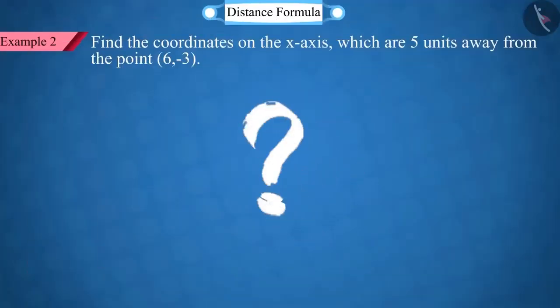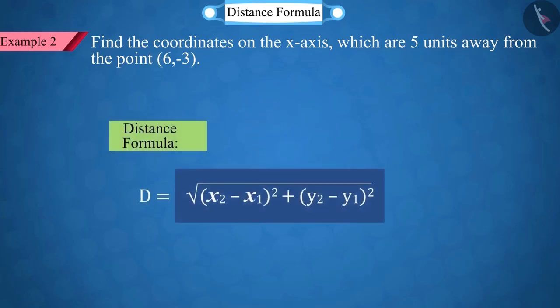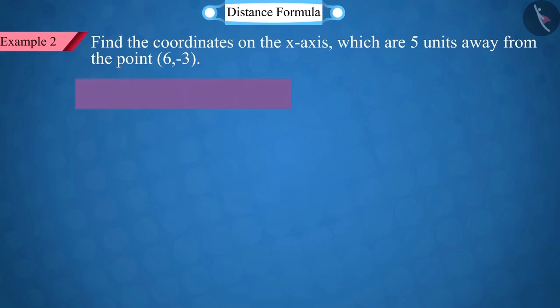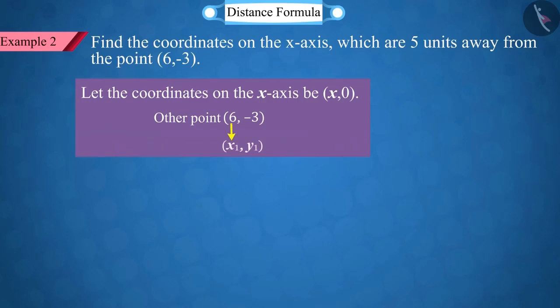Can you tell what we have to do first? Right answer. For this, we will take the help of distance formula. Let us first assume that the coordinates of the point on the x-axis are (x,0). Here, we are given another coordinate point (6,-3), whose first point, 6, is represented by x1 and -3 by y1. Similarly, the point on x-axis is represented by x2 and 0 by y2.